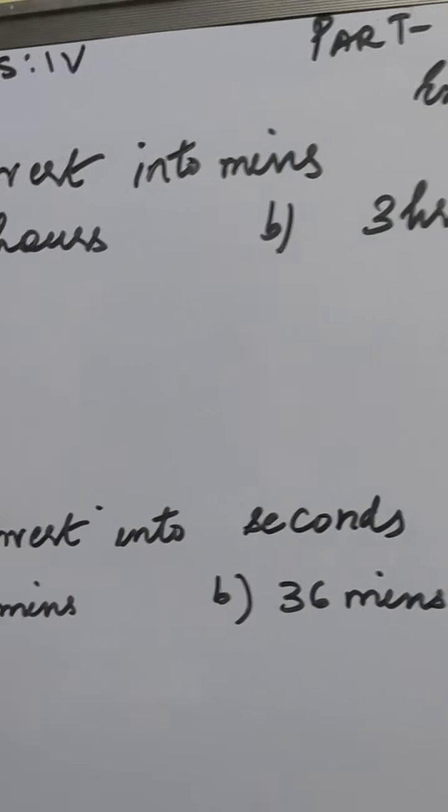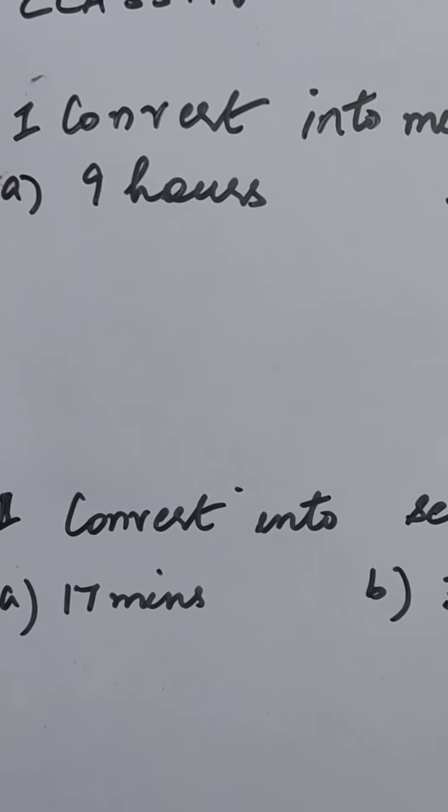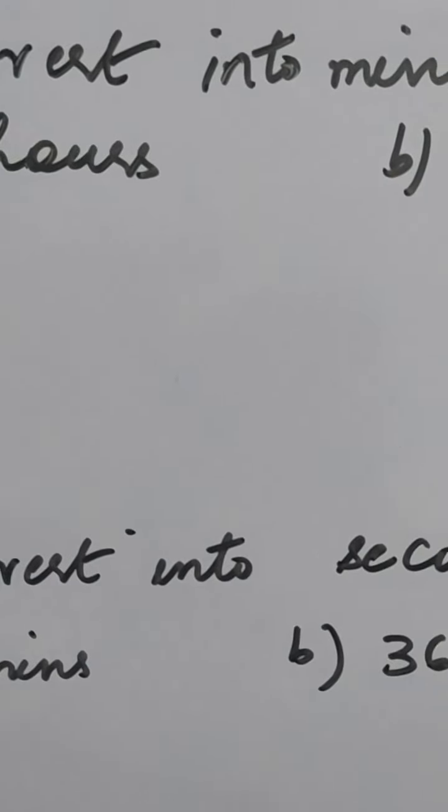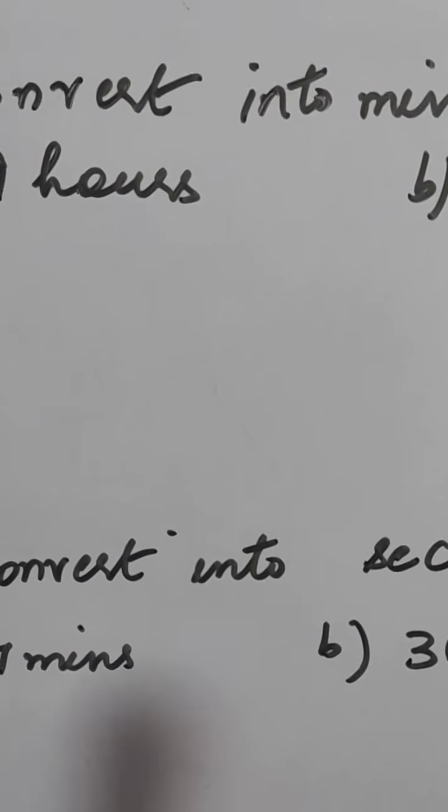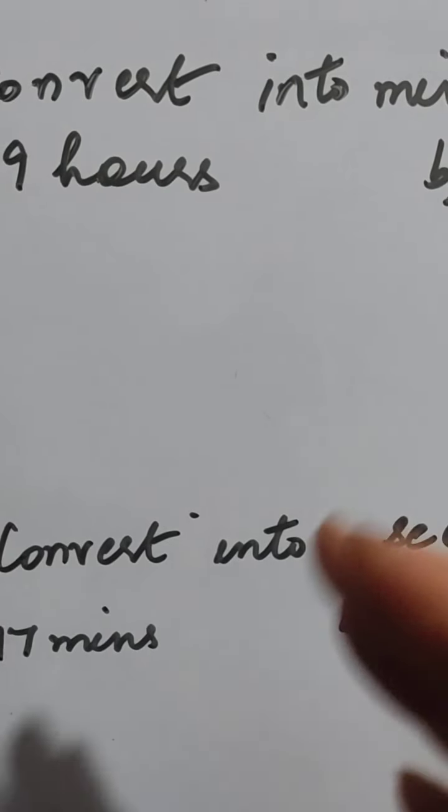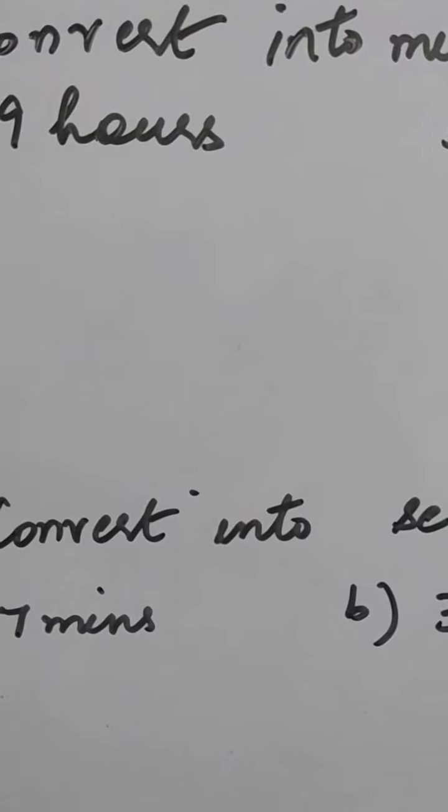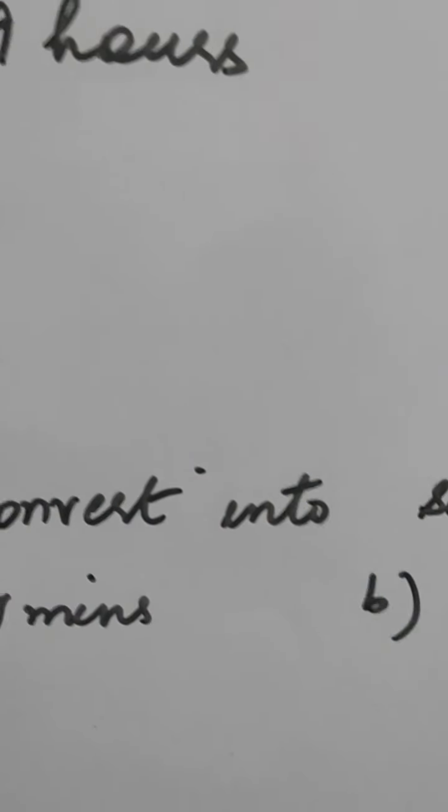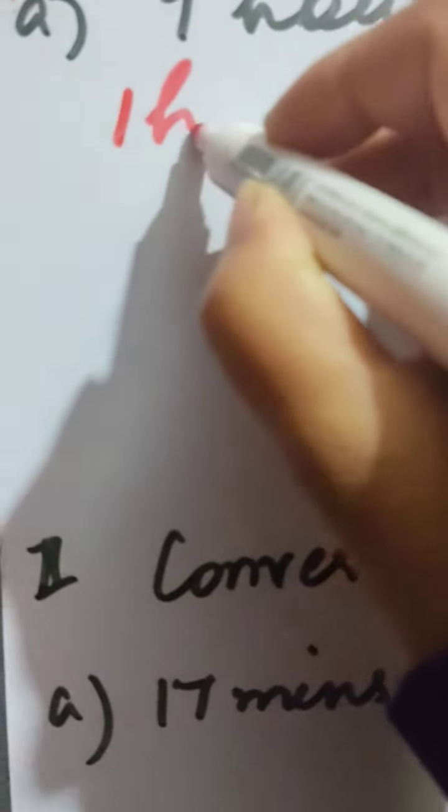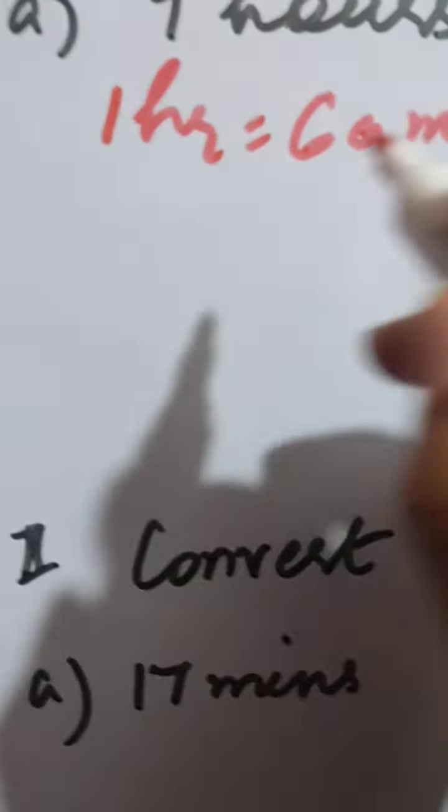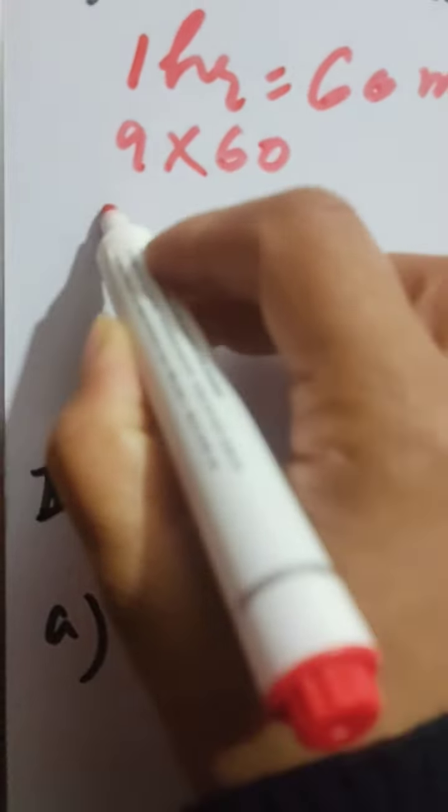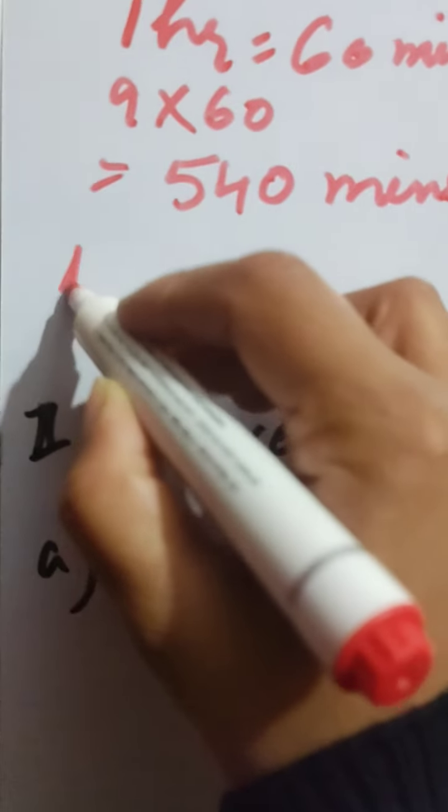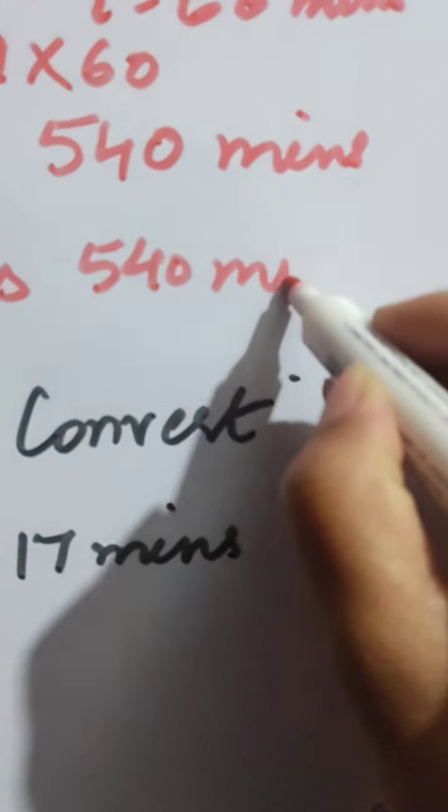We will start with exercise 2, that is the conversion exercise of time. The first question is convert into minutes and we are given 9 hours. You know what is the relationship between hours and minutes. 1 hour is equal to 60 minutes and the hours are more than minutes. As we have done in measurement, the system is smaller to bigger we are going to divide and bigger to smaller we are going to multiply. So we multiply 1 hour equals 60 minutes, then 9 multiply by 60. What do you get? We get 540. See, it is very simple. Just as you did measurement, similarly your time conversion is done.